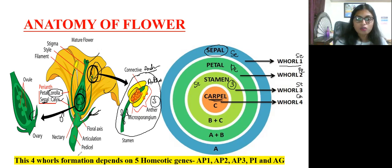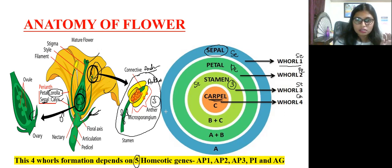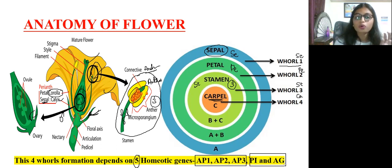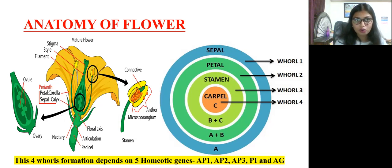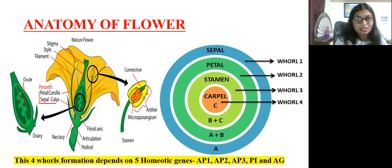The formation of these four whorls depends on five homeotic genes: AP1, AP2, AP3, PI (pistillata), and AG (agamous). These five genes are responsible for the formation of the four whorls. The sepal is expressed by gene A, petal by genes A and B, stamen by genes B and C, and carpel by gene C alone.